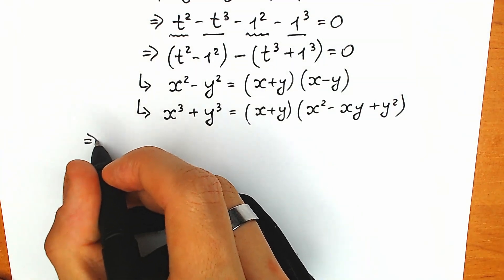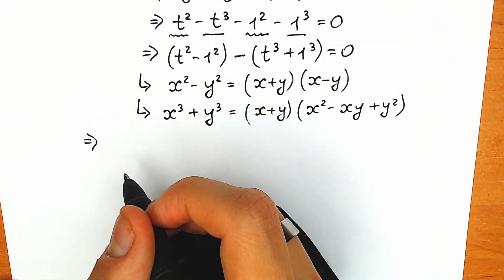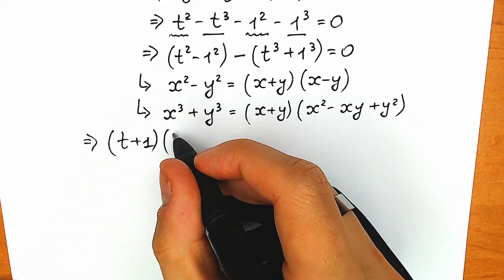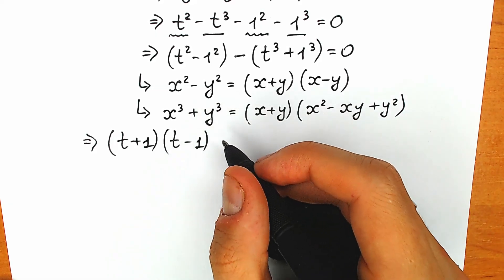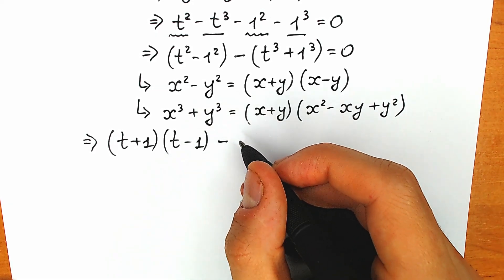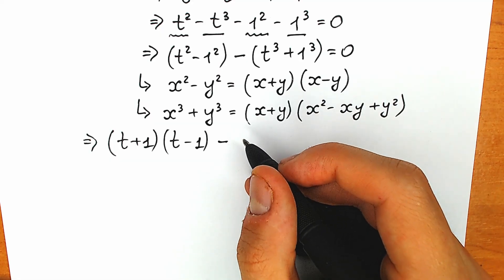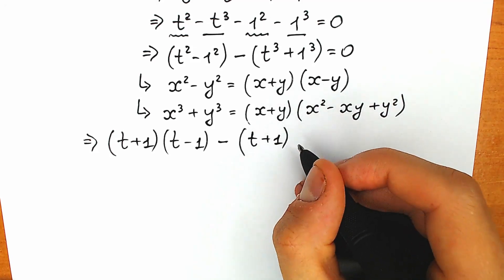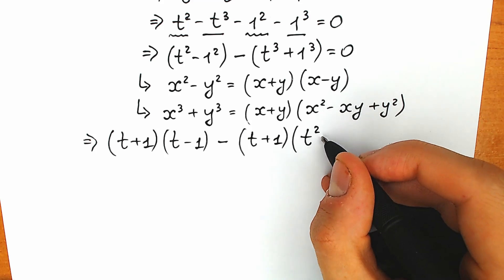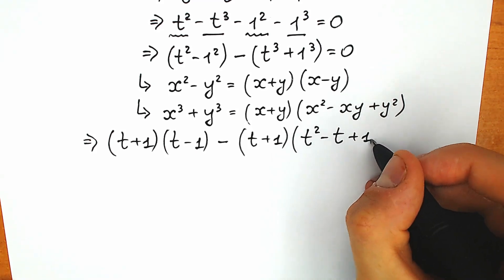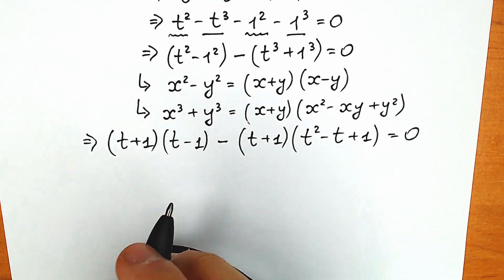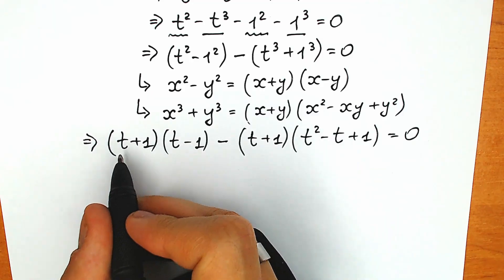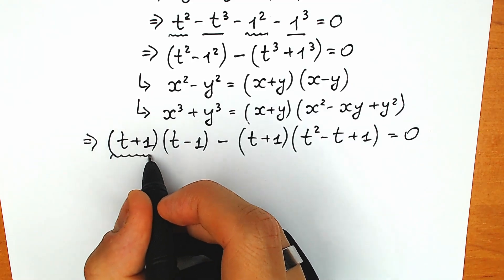Let's start on the left side. I want to start with the difference of squares. As a result we have t plus 1 times t minus 1. This is an easy case. Now we have minus, and another parenthesis from the sum of cubes. We can get x plus y, so we have t plus 1, and in another parenthesis: t squared minus t times 1 plus 1 squared, which gives t squared minus t plus 1. So we have the same expression t plus 1 appearing in both terms.